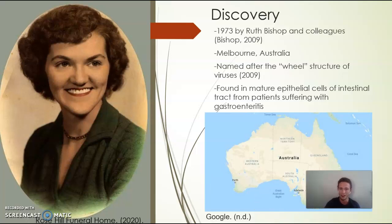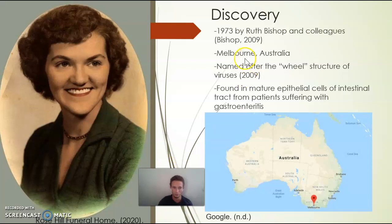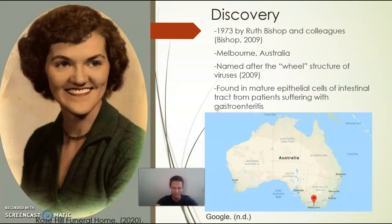Let's talk about the discovery. This is Ruth Bishop, who passed away last year in 2020. She was a really big leading biochemist in Australia. This was found in Melbourne, Australia—she discovered this with a group of colleagues and named it after the wheel structure. With any microbiology and checking for viruses, you have to isolate that sample from infected people. They found the rotavirus in the mature epithelial cells of patients suffering from gastroenteritis—diarrhea and vomiting. The common thread was this rotavirus. Thank you, Ruth Bishop, for figuring out what disease really nearly killed me personally.